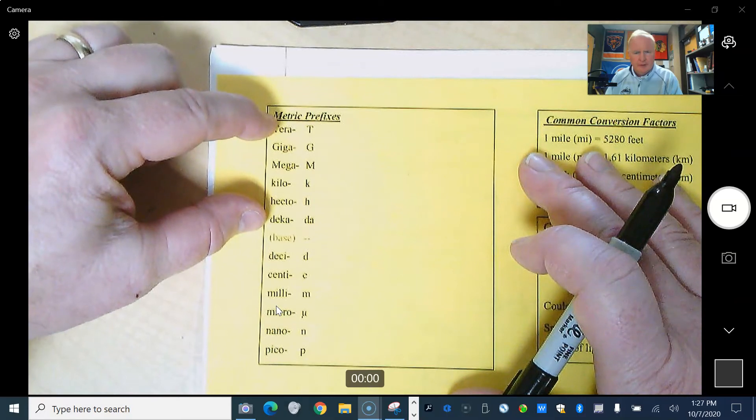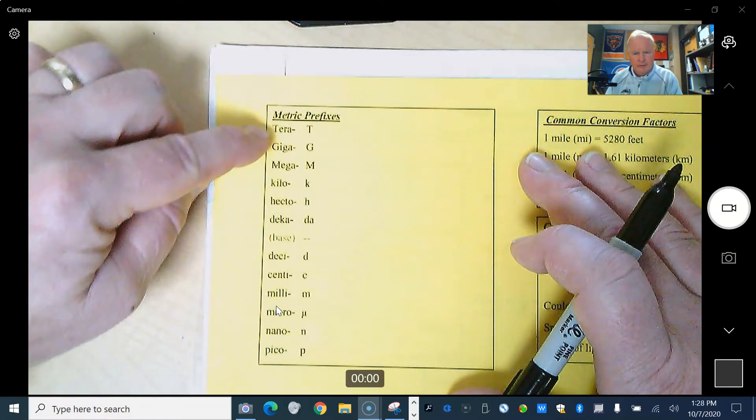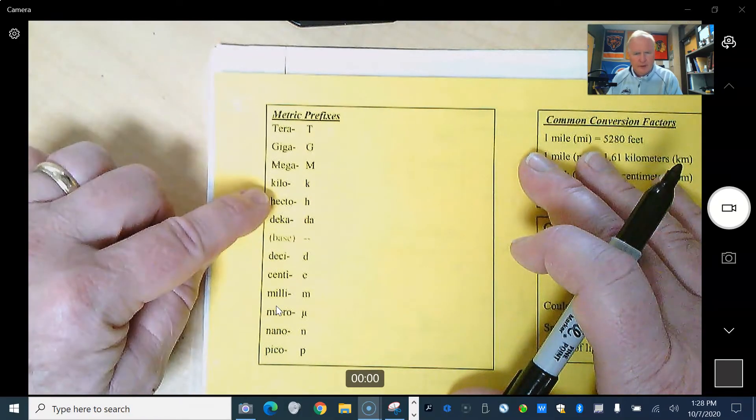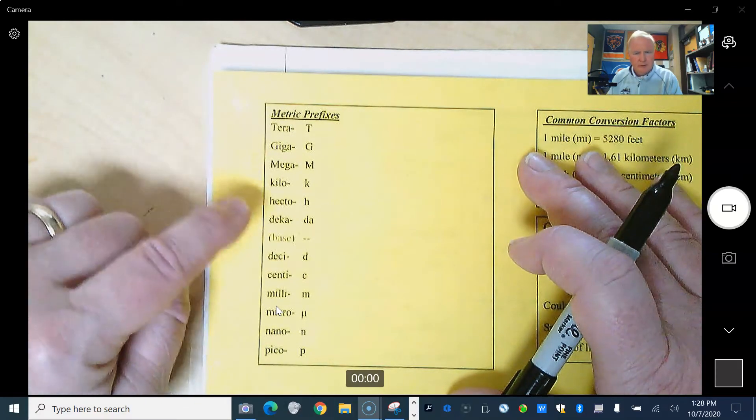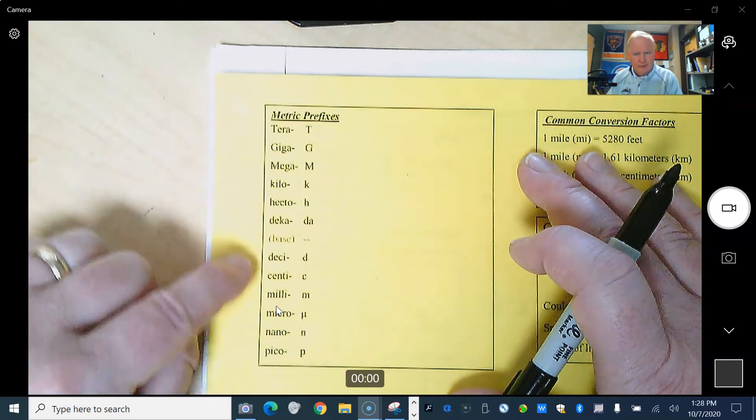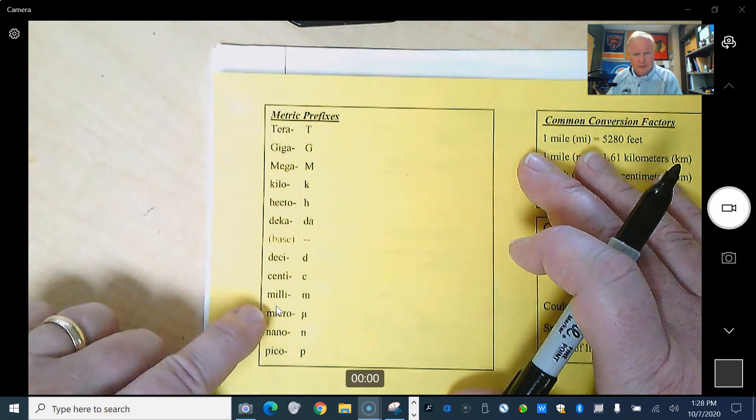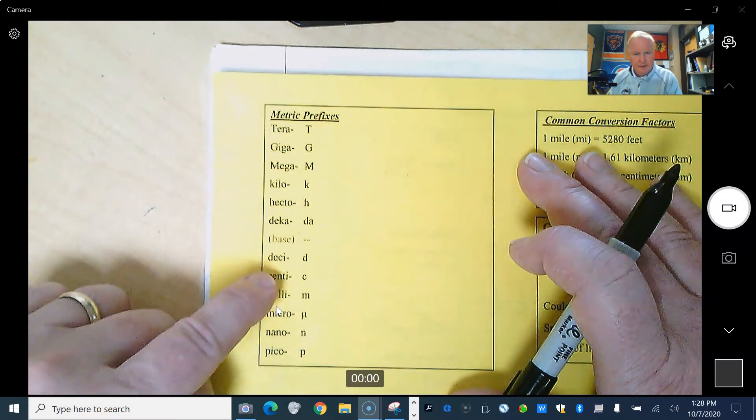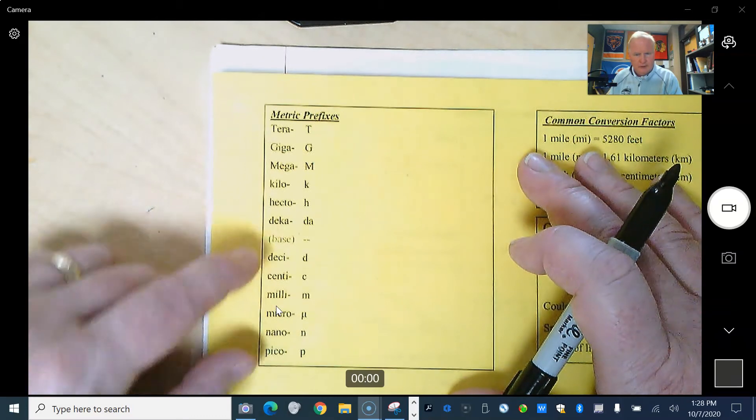And it works out very well if we're up here and we're going to go to any of these down to the base, or from the base up. There's two things that we can't do. We can't jump over the base, so we can't go from here all the way down to here. And we can't jump in between these two sections.